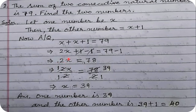Now to get rid of the 2, we divide both sides by 2. Whatever operation we apply on the left hand side, the same must be applied on the right hand side with the same number, to maintain equality. Dividing: 2x ÷ 2 cancels to give x, and 78 ÷ 2 gives 39.